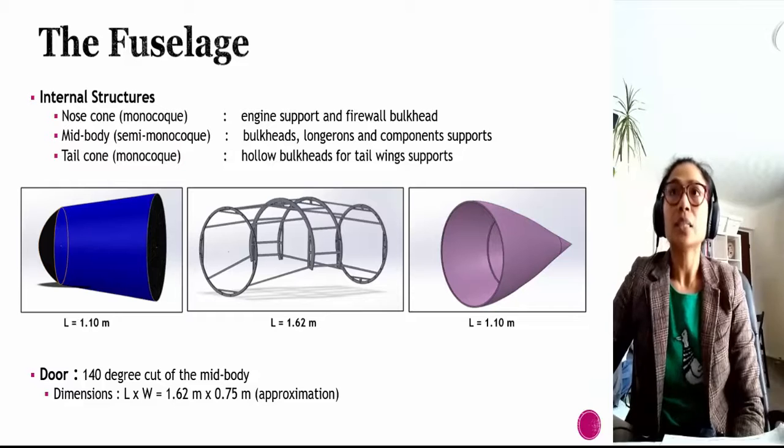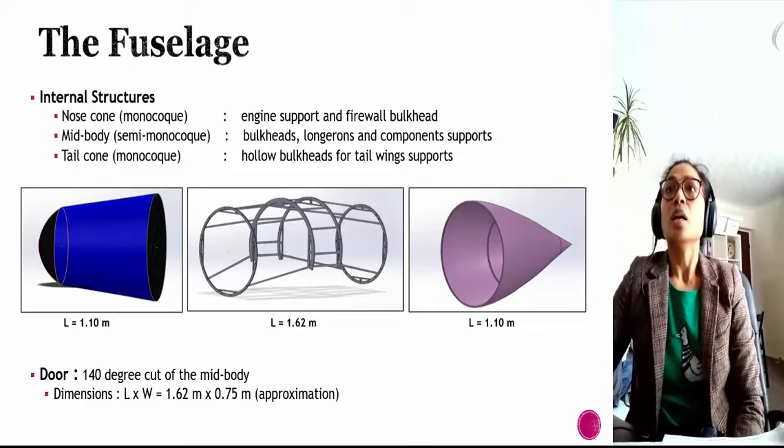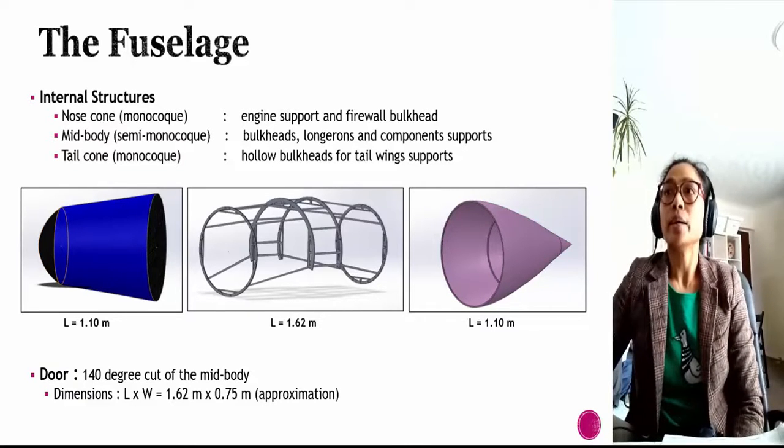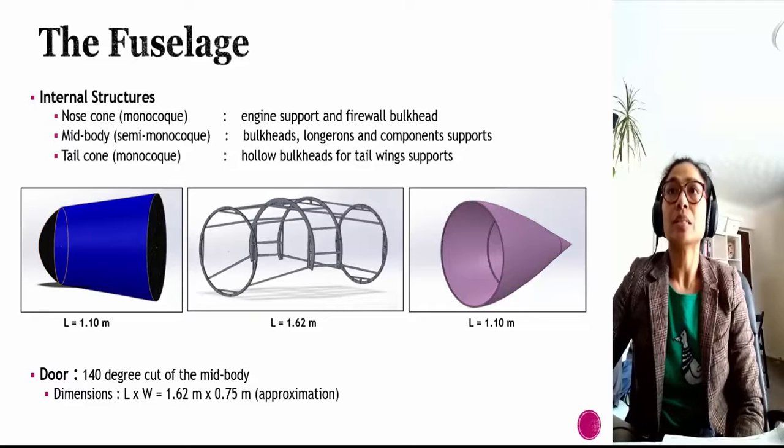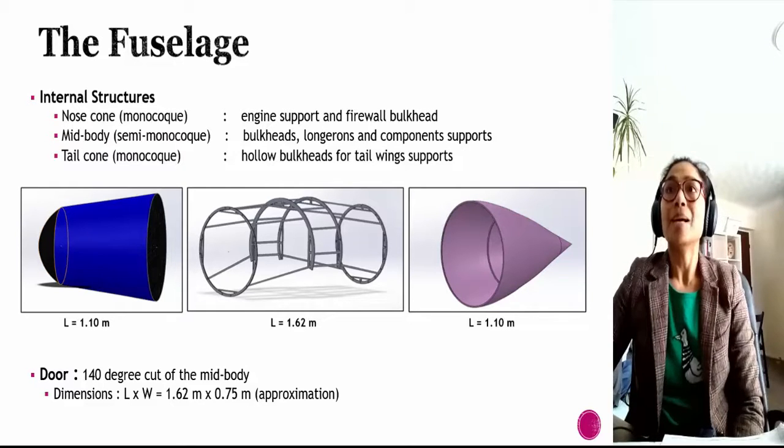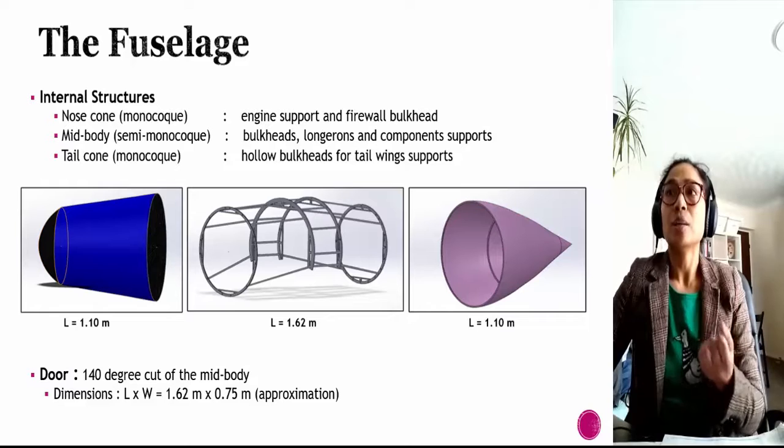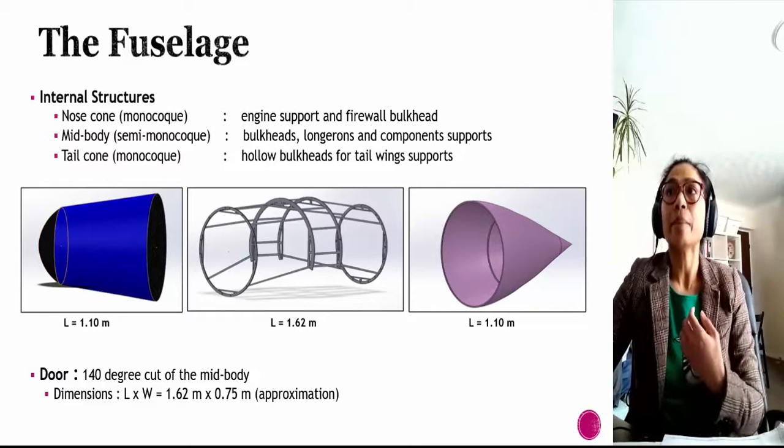The midbody of the fuselage is a semi-monocoque structure. A stronger structure is required to support the main wings and the payload system. The tail cone is designed using a monocoque structure, the same as the nose cone, but uses a hollow shape bulkhead to support the empennage structure.